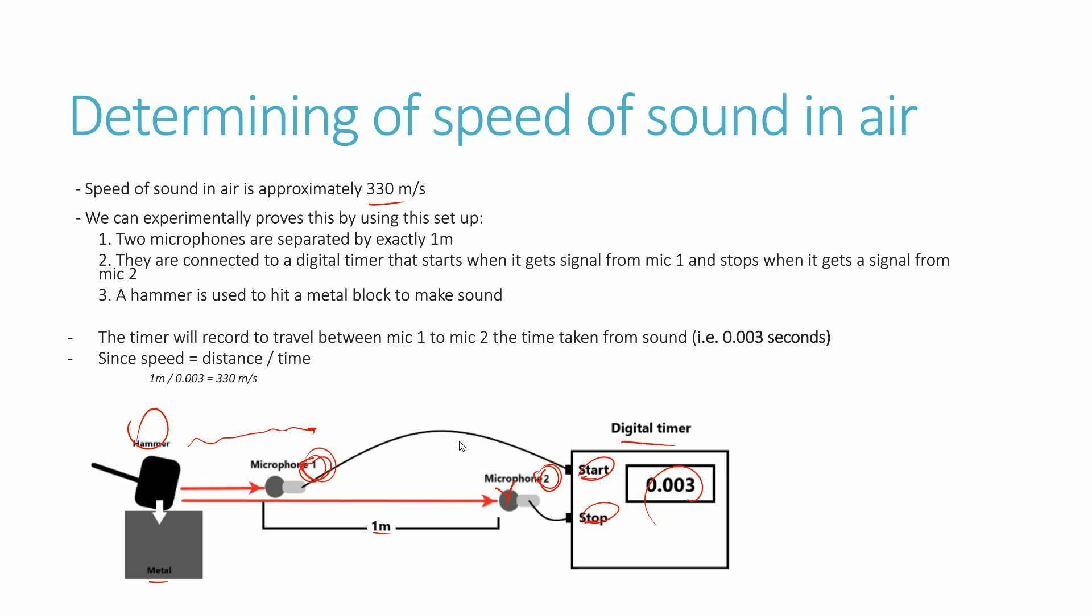As the sound reaches the microphone two, then the digital timer will automatically stop giving you some sort of reading. In this particular example we're going to assume that the reading was 0.003 seconds. Your standard speed equals distance over time will give you an answer of one meter divided by 0.003 seconds which gives you around 330 meters per second. Of course in the real world the answer might be a little bit different but it should be within the realm of this number here.